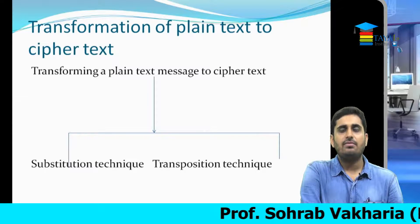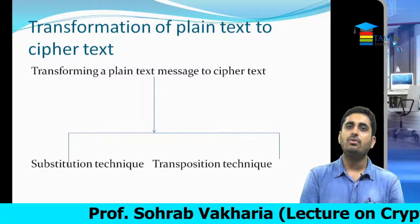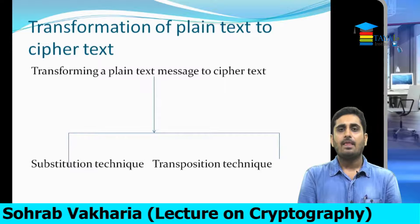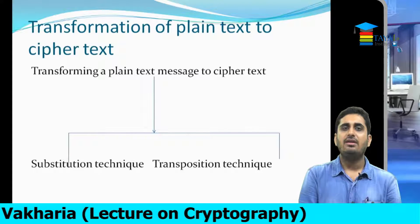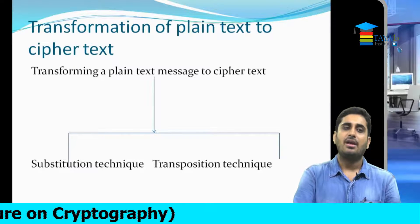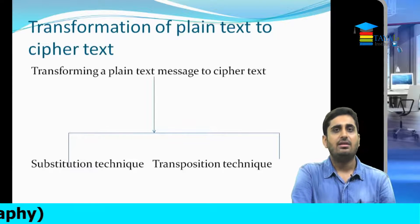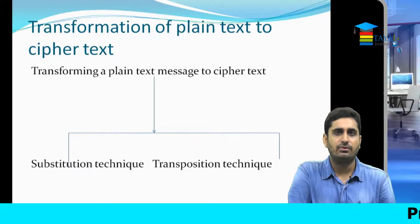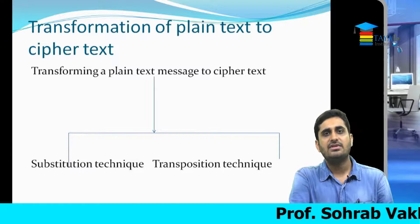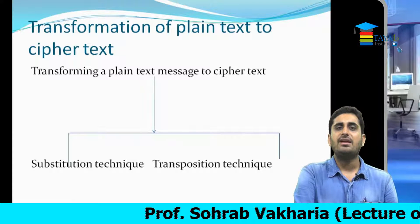A substitution technique is a technique wherein you substitute one element with another. In our alphabet from A to Z, you substitute all the characters with some other character. For example, A is substituted with B, B with C, C with D, and so further — you are replacing one character with some other character. That is the substitution technique, the easiest way to achieve encryption.